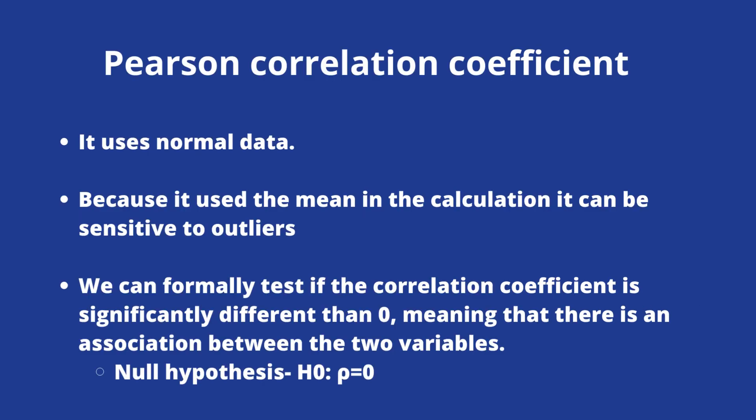A Pearson correlation coefficient uses normal data. And because it includes the mean in the calculation, it can be very sensitive to outliers. We can formally test if the correlation coefficient is different than zero. So in these cases, we are going to have the null hypothesis as the correlation coefficient being equal to zero.